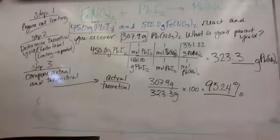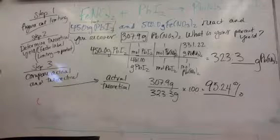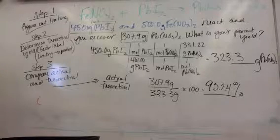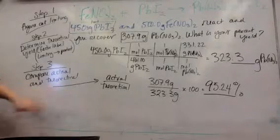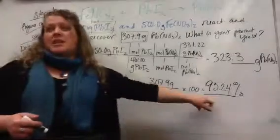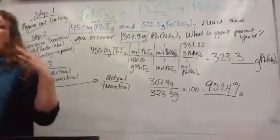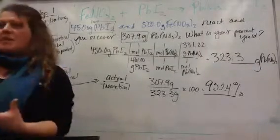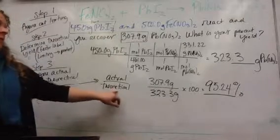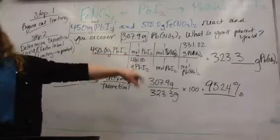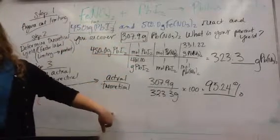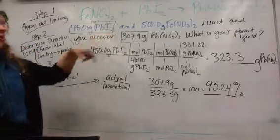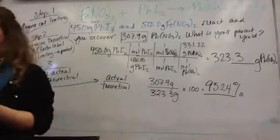There are two ways that this can work. So when you're doing a percent yield problem, there are three pieces of information you're working with. Once you get down to step three, you're working with your actual, your theoretical, and your percent yield. So two of those have to be given to you, or the means to find them given to you. So here, I didn't give you your theoretical yield, but I gave you everything you needed to figure it out.